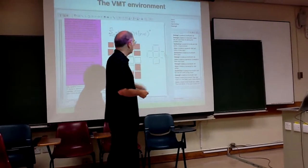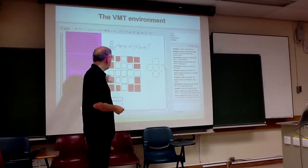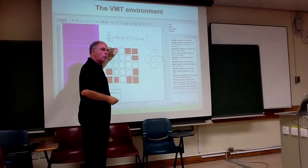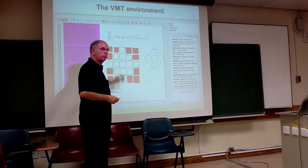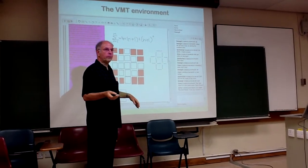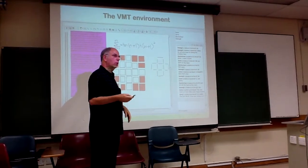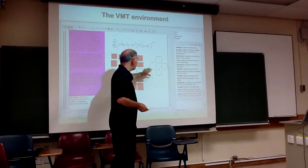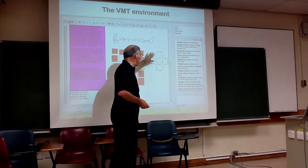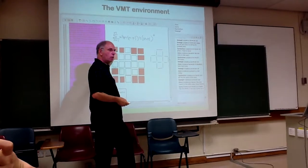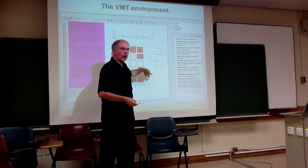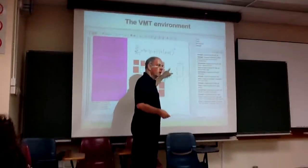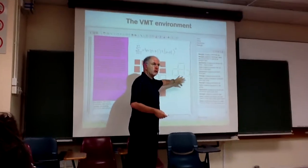This is actually part of the chat that we're going to analyze. They're working on a problem that involves a diamond pattern composed of squares. The mathematical question they've been working on is: if you have a sequence that grows from this diamond shape to a bigger one and so on, how many squares does it take to make up the pattern, and how many individual lines does it take as the pattern grows?